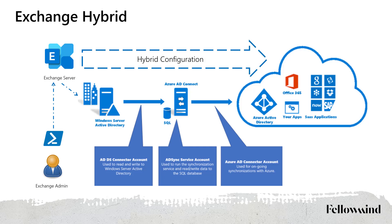How does it work? For example, you create a user account in your on-premise Active Directory. Why? Because you have a lot of other on-premise services that need your on-premise account, and you cannot just disable or remove your on-premise Active Directory and start using Azure Active Directory — it will not work that way in reality. You create an on-premise account, add all necessary attributes, and after that this information will be replicated to Azure Active Directory.